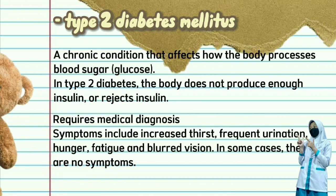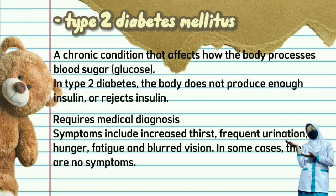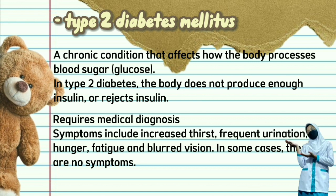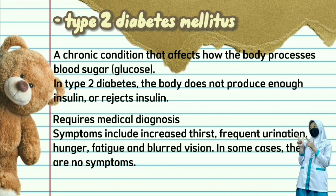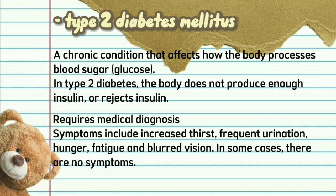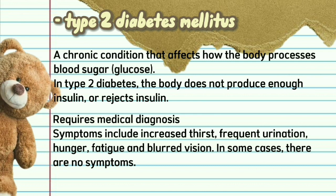Type 2 Diabetes Mellitus: a chronic condition that affects how the body processes blood sugar or glucose. The body does not produce enough insulin or rejects insulin. It requires a medical diagnosis. Symptoms include increased thirst, frequent urination, hunger, fatigue, and blurred vision. In some cases, there are no symptoms.